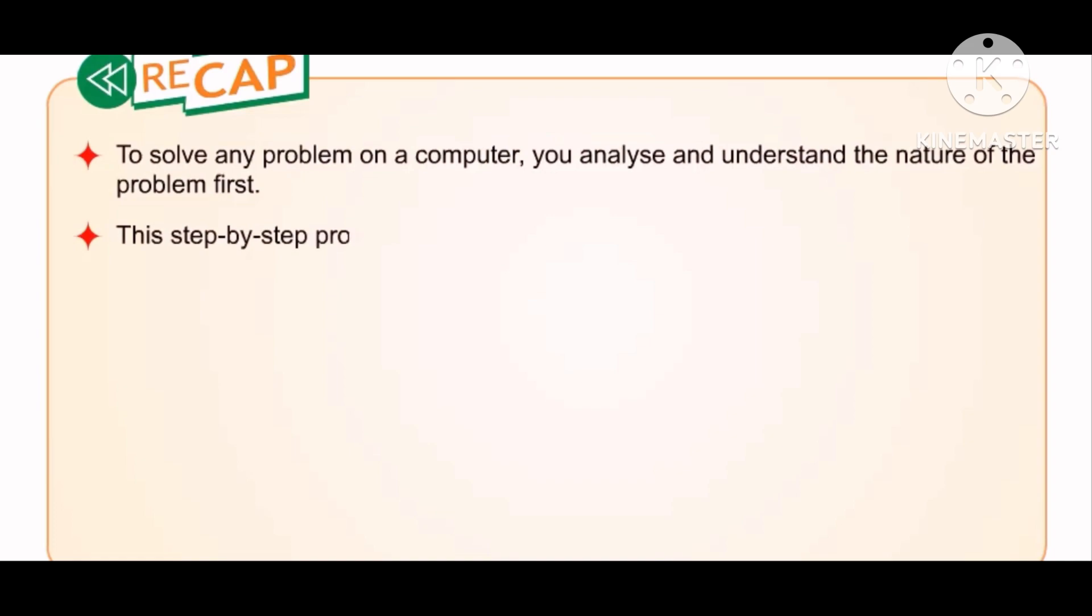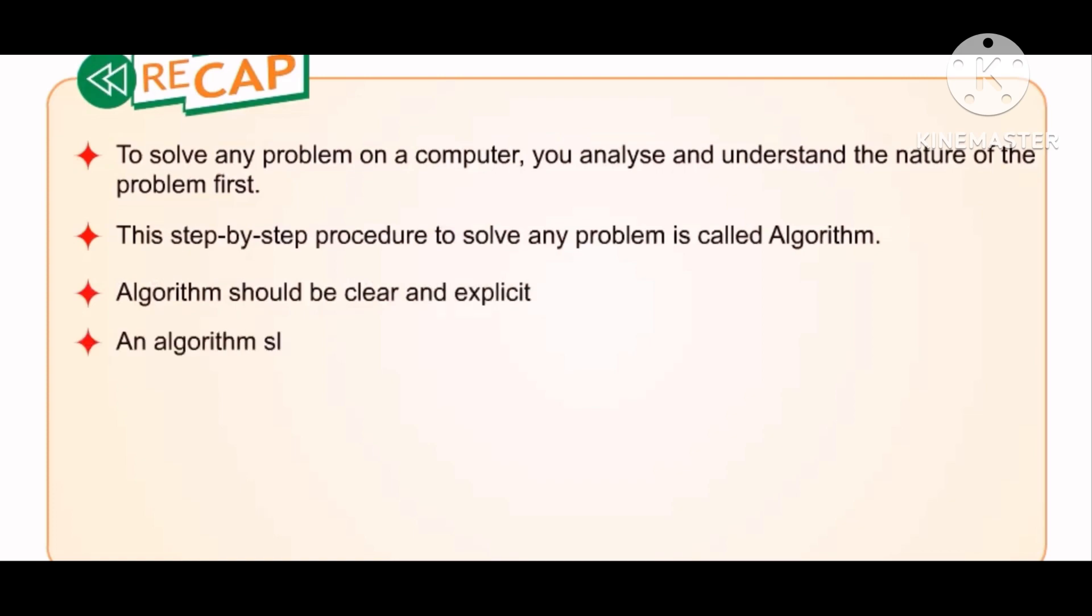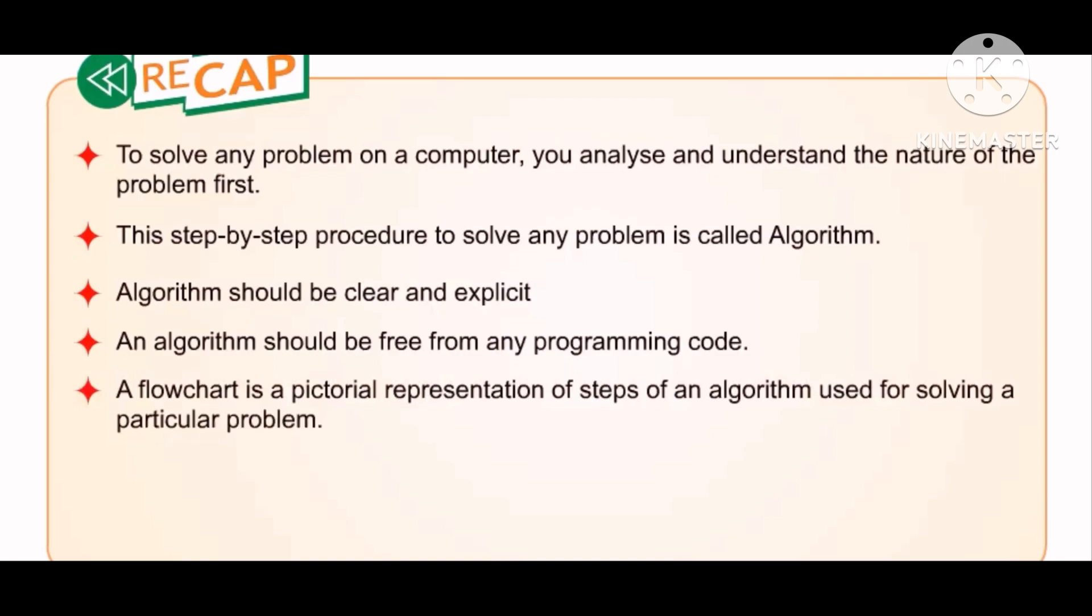Okay, students, let us take a recap of this chapter. To solve any problem on a computer, you analyze and understand the nature of the problem first. The step-by-step procedure to solve any problem is called algorithm. An algorithm should be clear and explicit. An algorithm should be free from any programming code. A flowchart is a pictorial representation of steps of an algorithm used for solving a particular problem. A flowchart should consist of standardized and acceptable symbols. A flowchart should have short, clear and readable statements written inside the symbols.